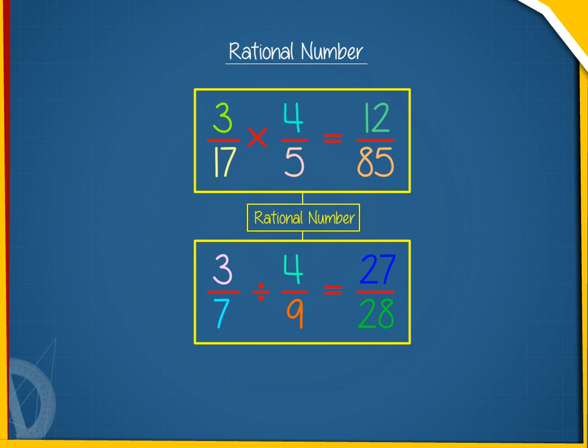All whole numbers and integers are also rational numbers. The negative and reciprocal of a rational number is again a rational number. Between two rational numbers there lies unlimited number of rational numbers.